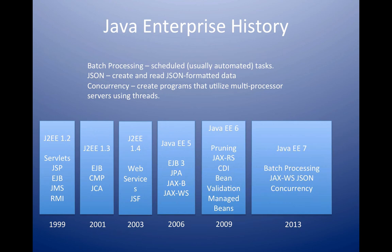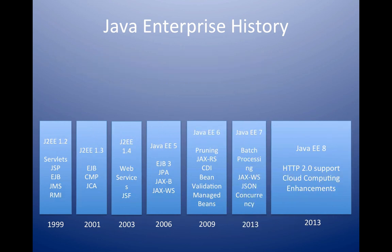In version 7, we get a few things with JSON-formatted data and concurrency for multi-threaded programs. Then in 2013, with Java EE 8, we start getting into the cloud computing phase. But the idea we're going to see here — with Java Server Pages in our first tutorial — brings us back to the fundamental and first use of Java as a dynamic web programming language.